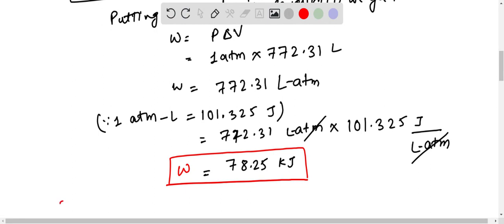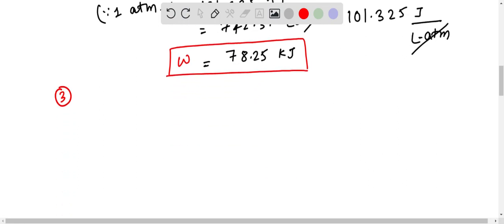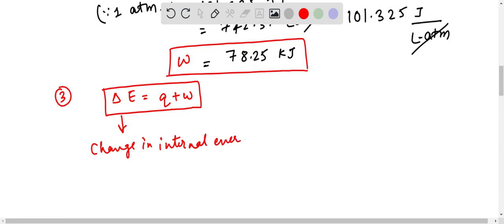Now finally we need to find for the third step. What we have in the third step, delta E is given by Q plus W. How this came? This is nothing but change in internal energy. This is heat, this is work done. This equation is nothing but first law of thermodynamics.